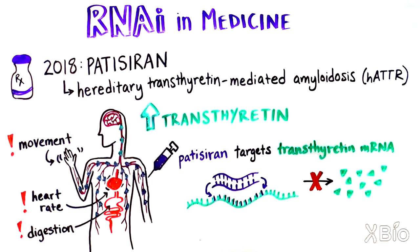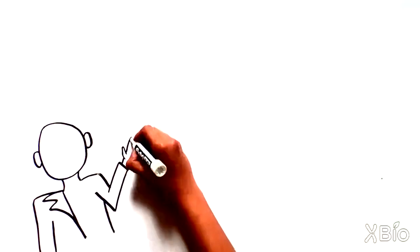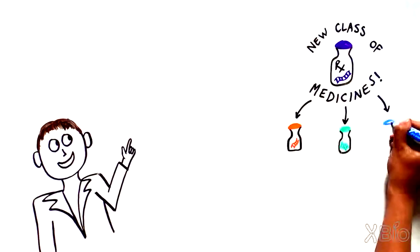Patients who received patisiran in a clinical trial had significantly improved muscle strength and movement compared to people receiving a placebo. This landmark approval ushered in an entirely new class of medicines for patients who had few options beforehand.